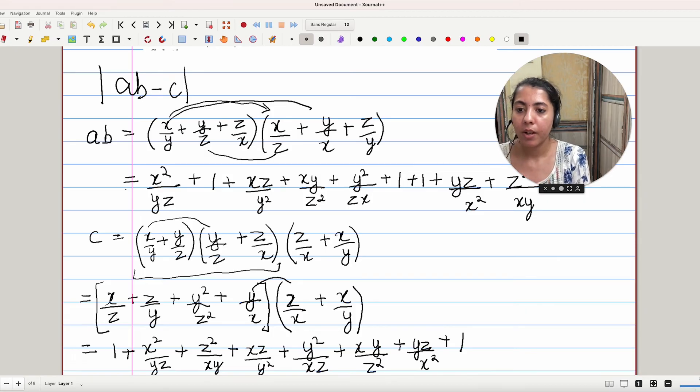So here we have to subtract these expressions. So what can we see here is all the expressions or all these terms are same, similar in AB and C. Let's cancel them out.